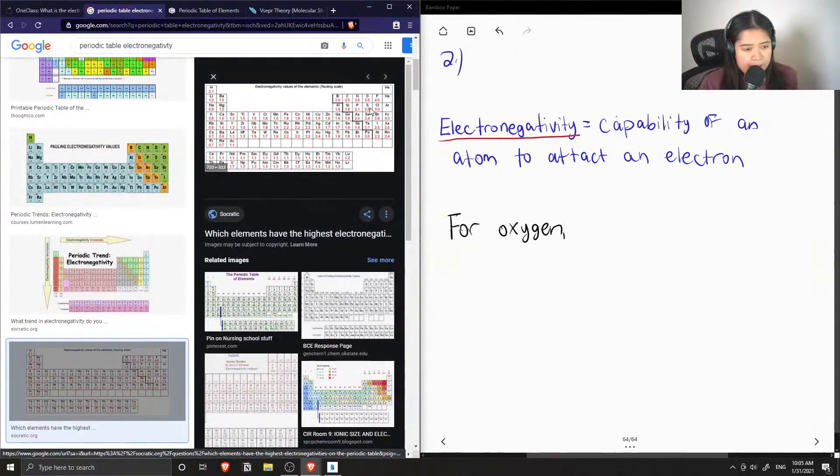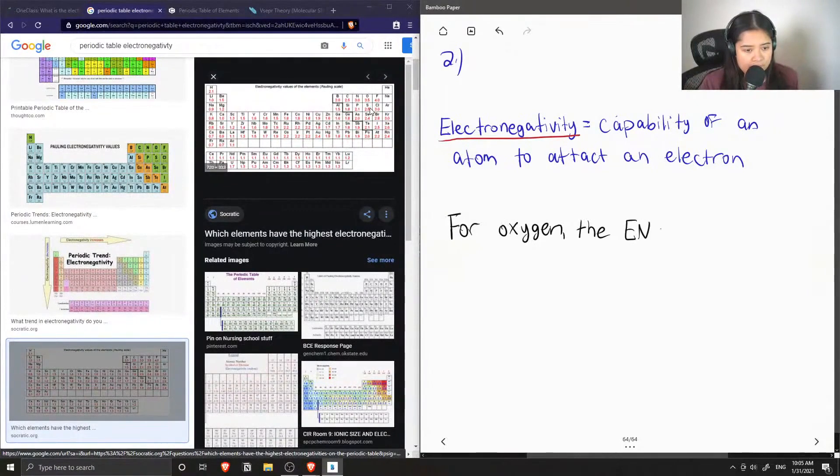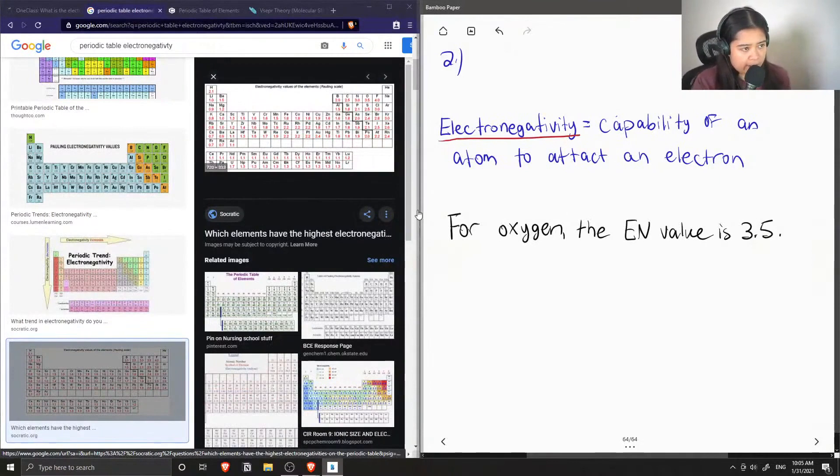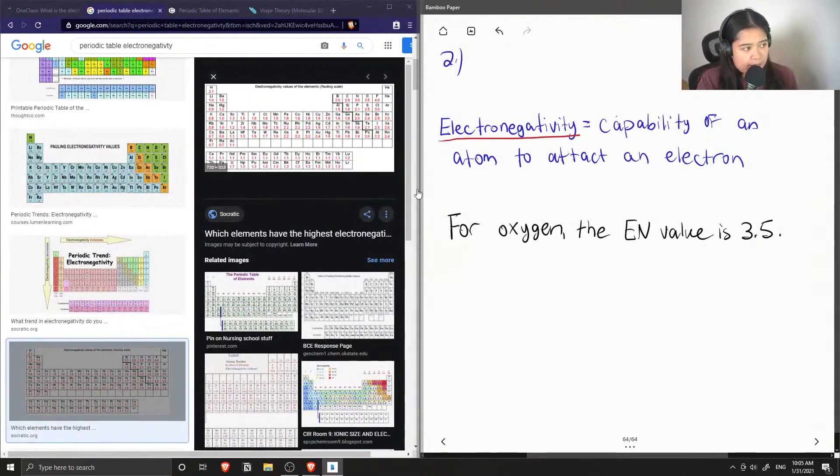which is relatively high. Okay, so 3.5, if we compare it to the other values, is pretty high. And you'll see that the highest electronegativity value is fluorine, which is 4.